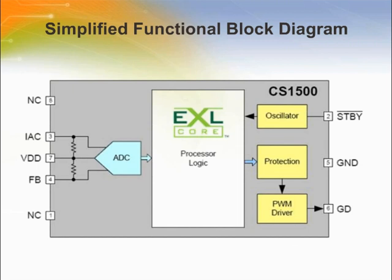The CS1500 and CS1600 PFC is based on the EXL core. It operates in variable on-time, variable frequency, discontinuous conduction mode. The analog-to-digital converter shown in the block diagram is used to sense the PFC output voltage and the rectified AC line voltage by measuring currents through their respective resistors. The magnitude of these currents are measured as a proportion of the reference current, which functions as the reference for the ADC.